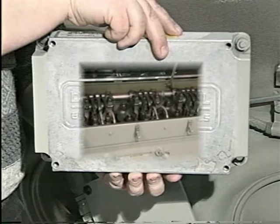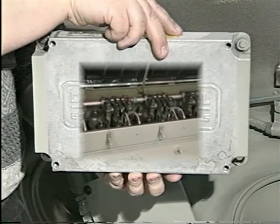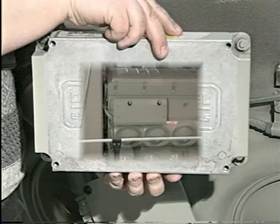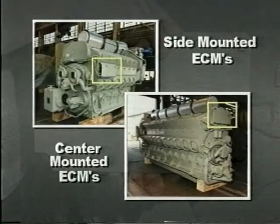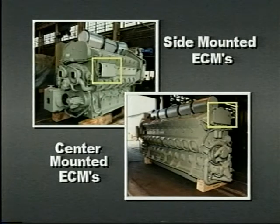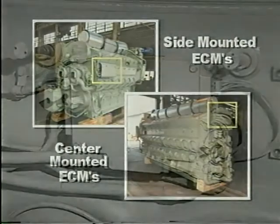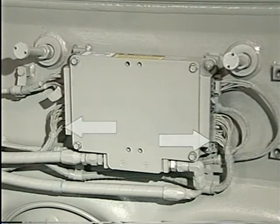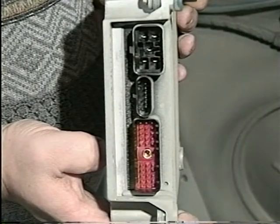Since each module has the ability to control eight fuel injectors, the actual number of units found on an engine depends on the number of cylinders. These modules may be found mounted on the sides of the engine, or on the center front of the engine. Note that although the units are sealed, they have a number of ports to allow connection to various system components through internal and external wiring harnesses.